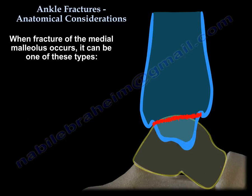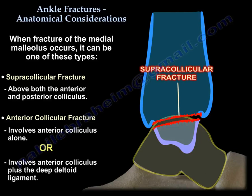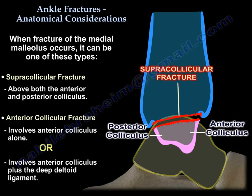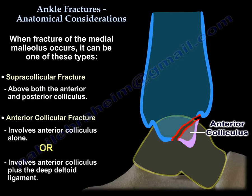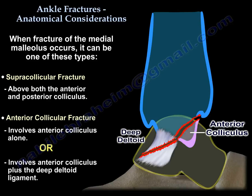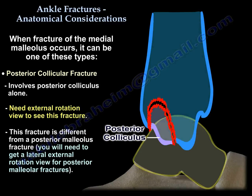Fractures of the medial malleolus can be one of several types: the supracollicular fracture, which is above both the anterior and posterior colliculus; an anterior colliculus fracture alone, which is a small avulsion fracture; an anterior colliculus fracture plus deep deltoid ligament injury due to the direction of force; or a fracture of the posterior colliculus, which requires an AP external rotation view to see — different from the posterior malleolus fracture, which requires a lateral external rotation view.